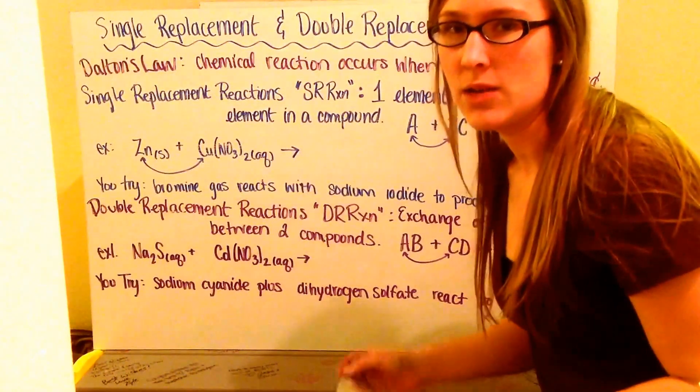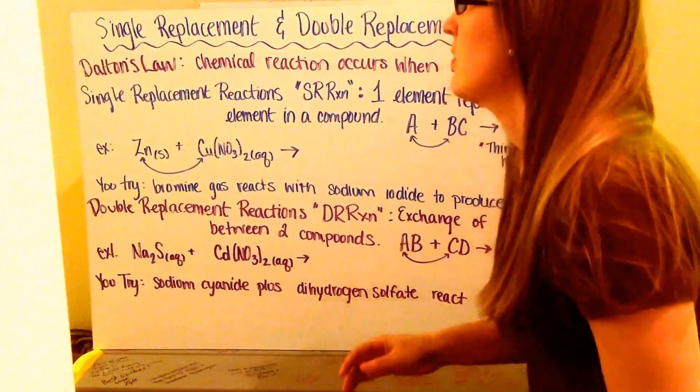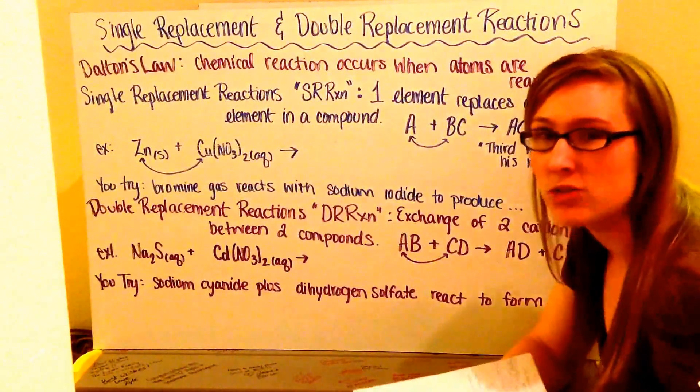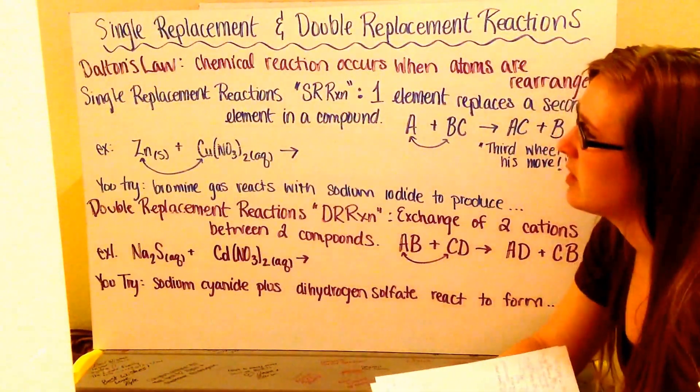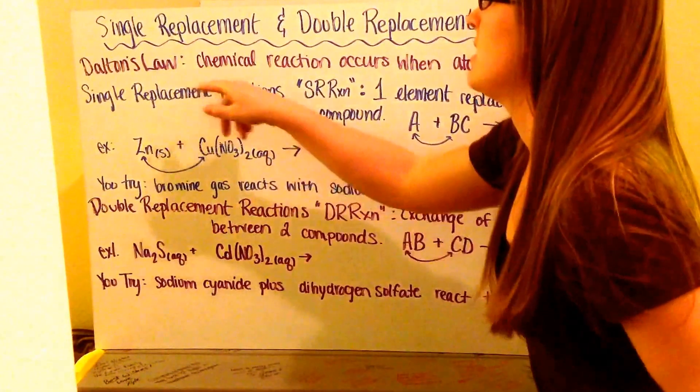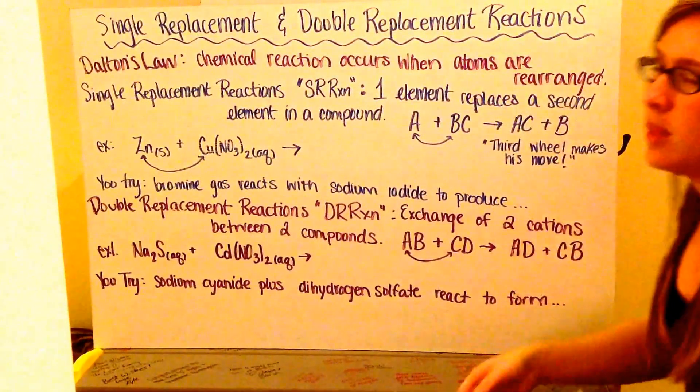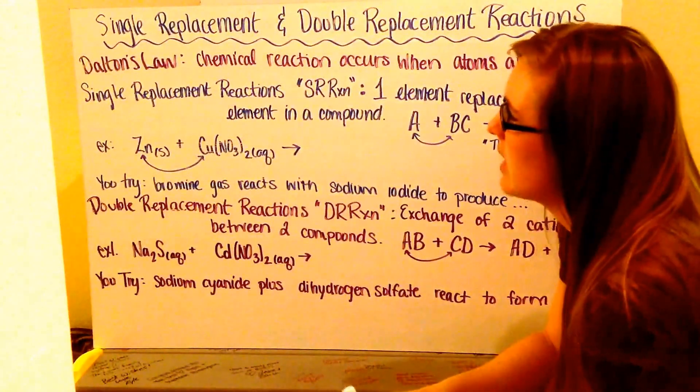This video is on single replacement and double replacement reactions. All of our chemical reactions relate back to Dalton's atomic theory. Dalton's law said that chemical reactions occur when atoms are rearranged. These are two examples of reactions where atoms get rearranged.